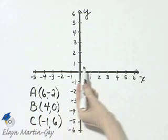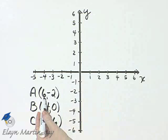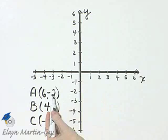So we start at the origin. Remember, this is the x coordinate. It tells us how many units to move left or right. From there, this is the y coordinate. It tells us how many units to move up or down.